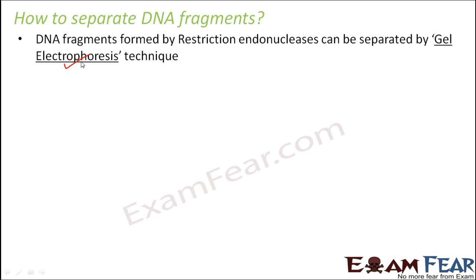So what is this gel electrophoresis? It has a gel because it makes use of agarose gel which is made from agar. The word electro is related to electricity, so here an electric field is set up as part of the process. The word phoresis is derived from the word pores or holes. In the setup of electrophoresis, you will see well-like or pore-like structures. Because of all these things being present, the entire technique is called gel electrophoresis.